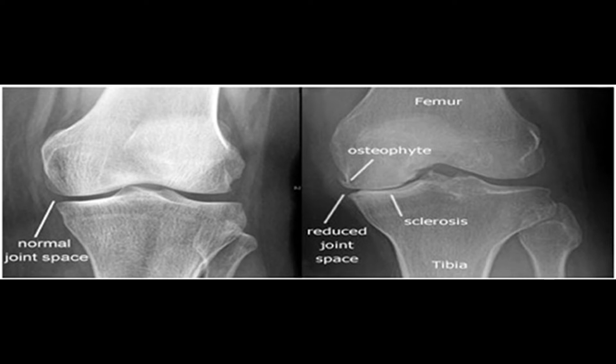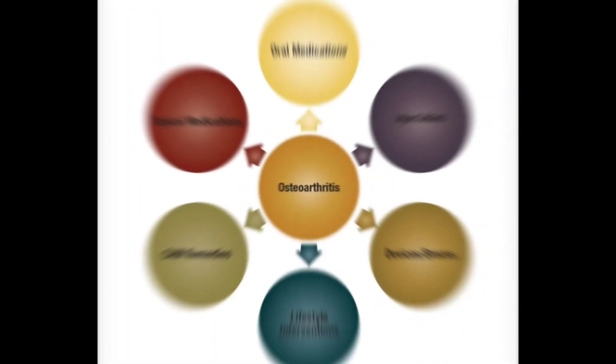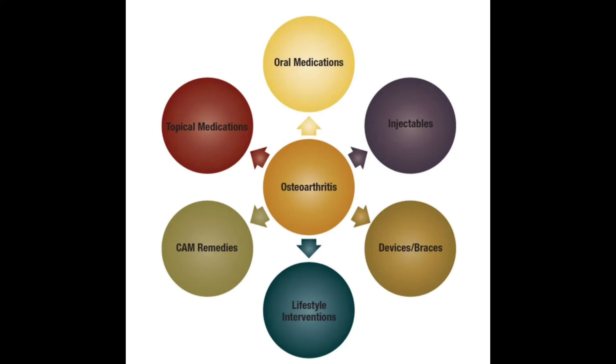Grade 4 is the most severe stage of osteoarthritis. The joint space between the bones will be greatly reduced, the cartilage will almost be completely gone, and the synovial fluid will be decreased.